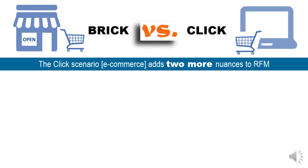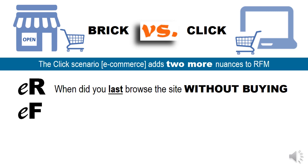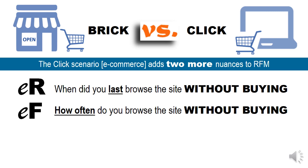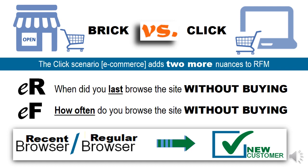Continuing our why RFM, let us look at the brick versus click market emerging today. The click scenario, or e-commerce market, adds two more variables — two nuances to RFM. I would call them electronic R and electronic F, or E-R and E-F. E-R is when did you last browse the site without buying. And E-F is how often do you browse the site without buying. This without-buying behavior is not very common in brick — once you go to a shop, most of the time we tend to buy. But it is very common in the click market, because you can do a lot of browsing and add things to the cart without actually buying. A recent browser or a regular browser could be your new customer, so keeping track of E-R and E-F is as important as keeping track of RFM.